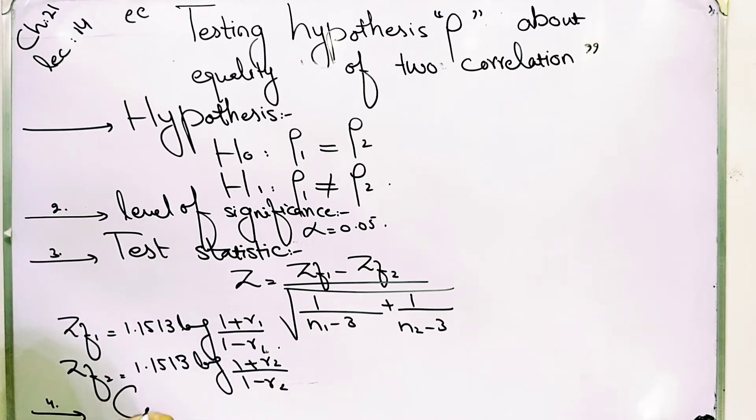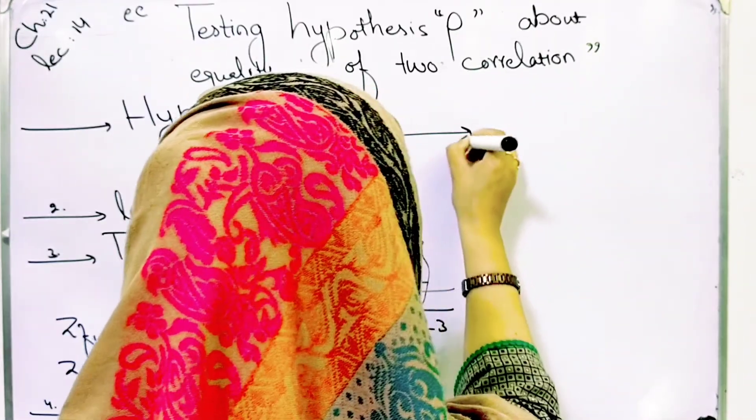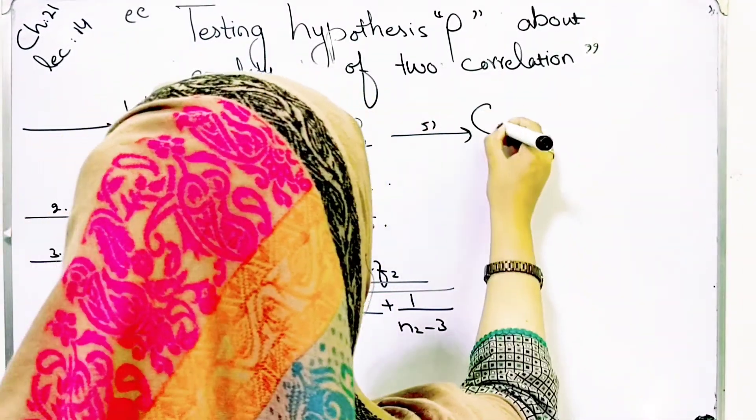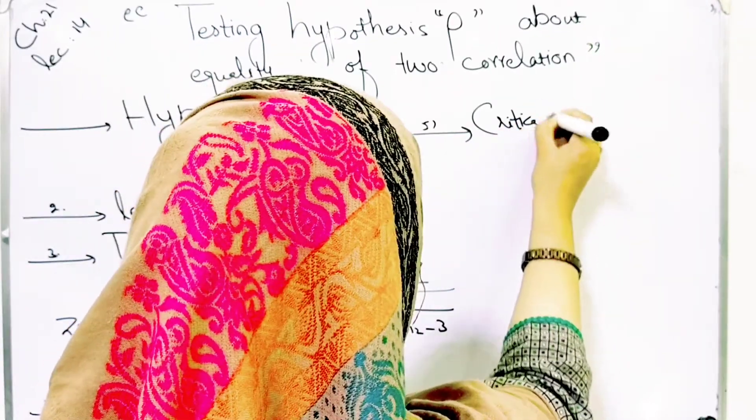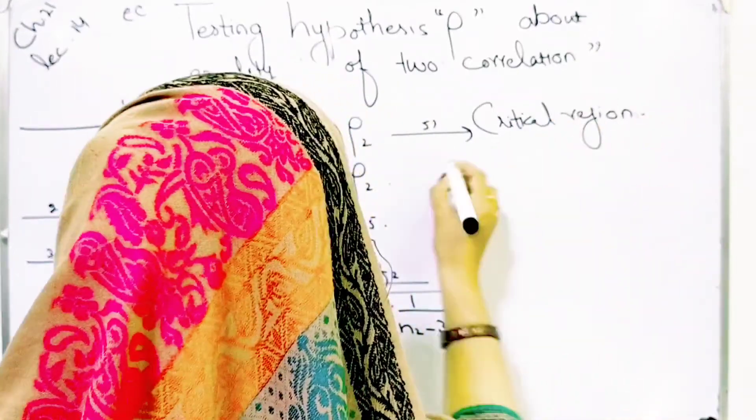The fourth step is computations, in which we have to compute these values. Then we have to do critical region. In the fifth step, you have to find out the critical region.